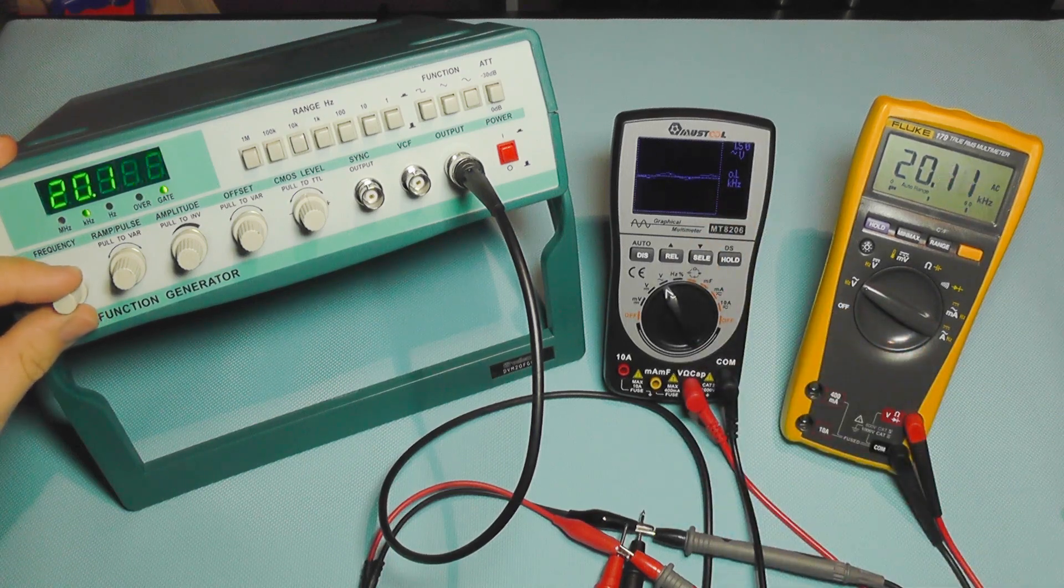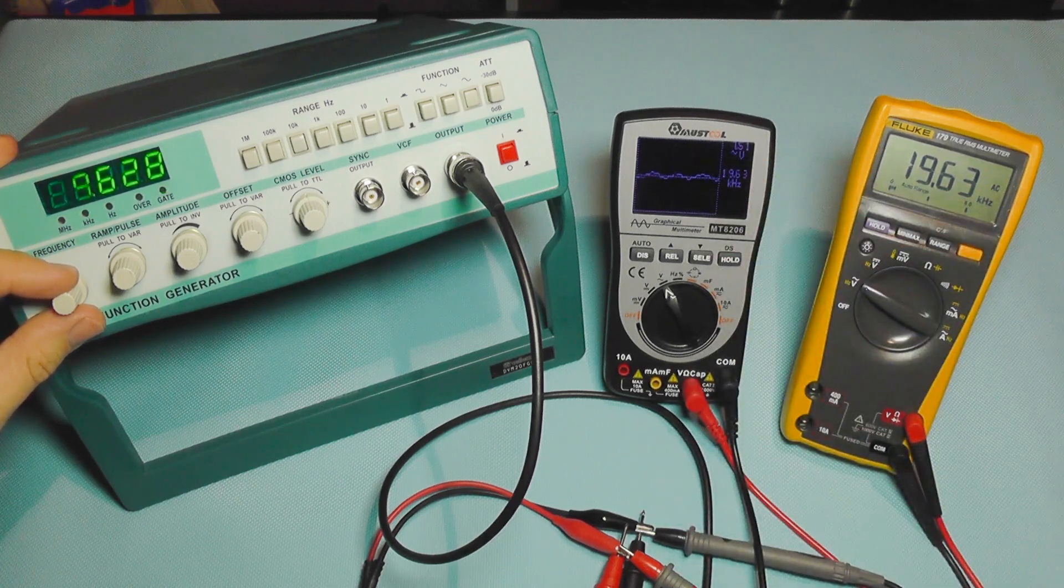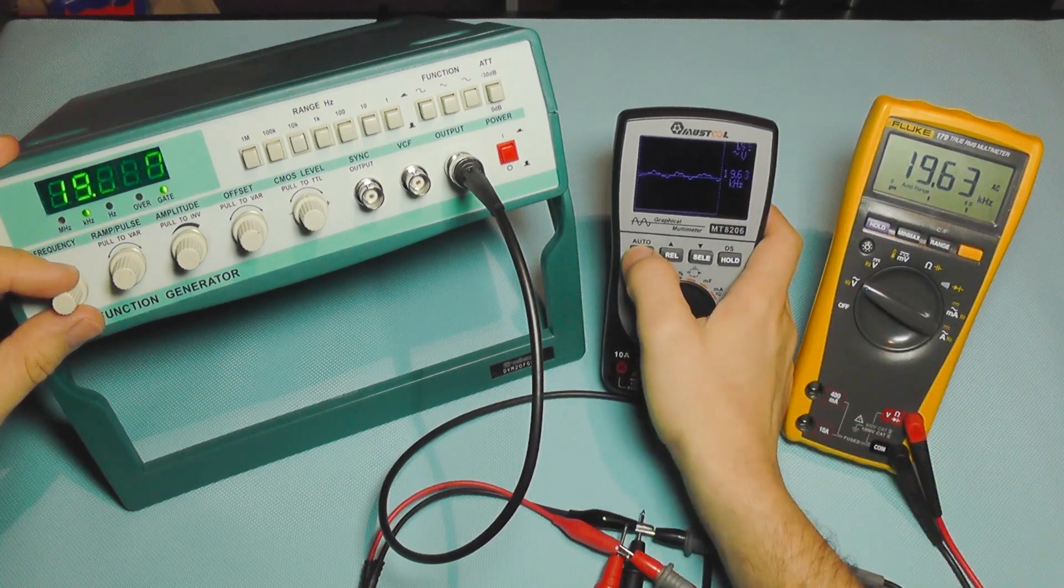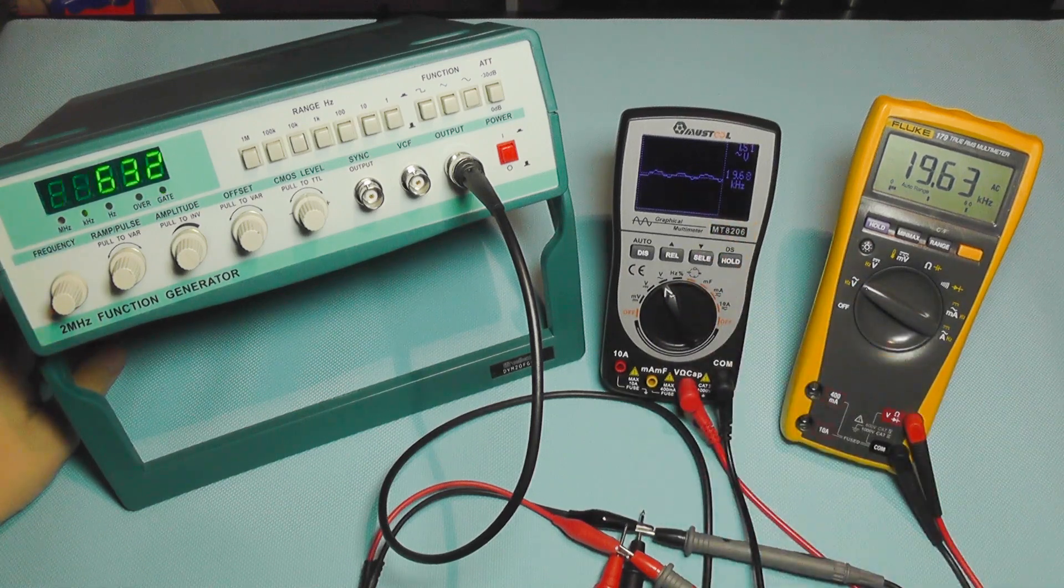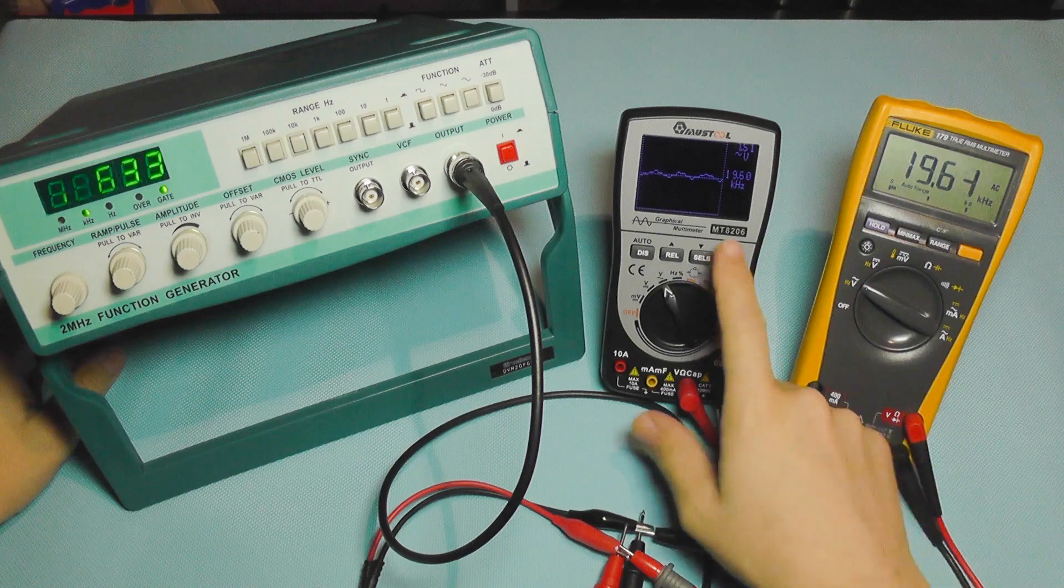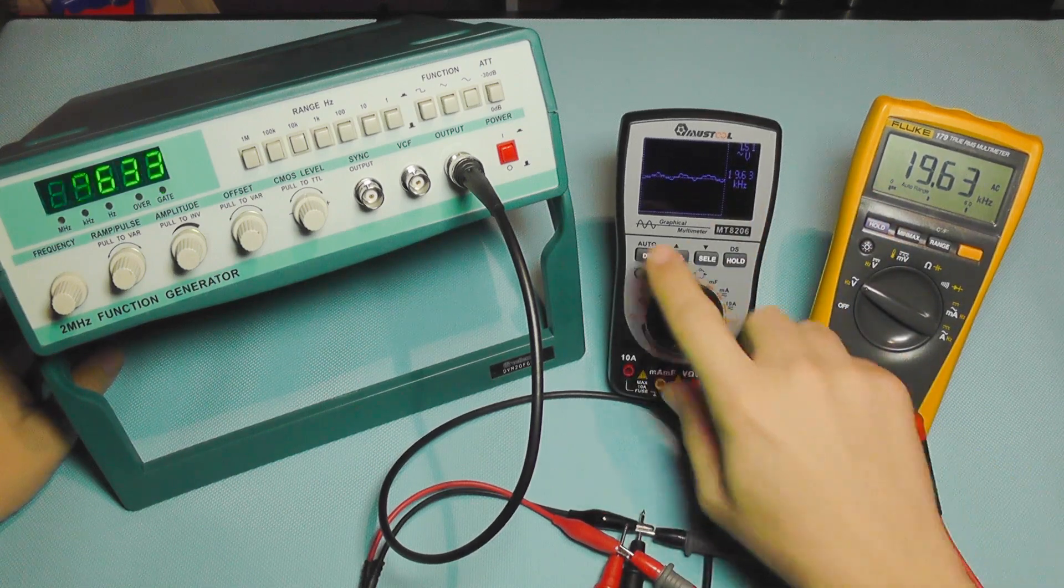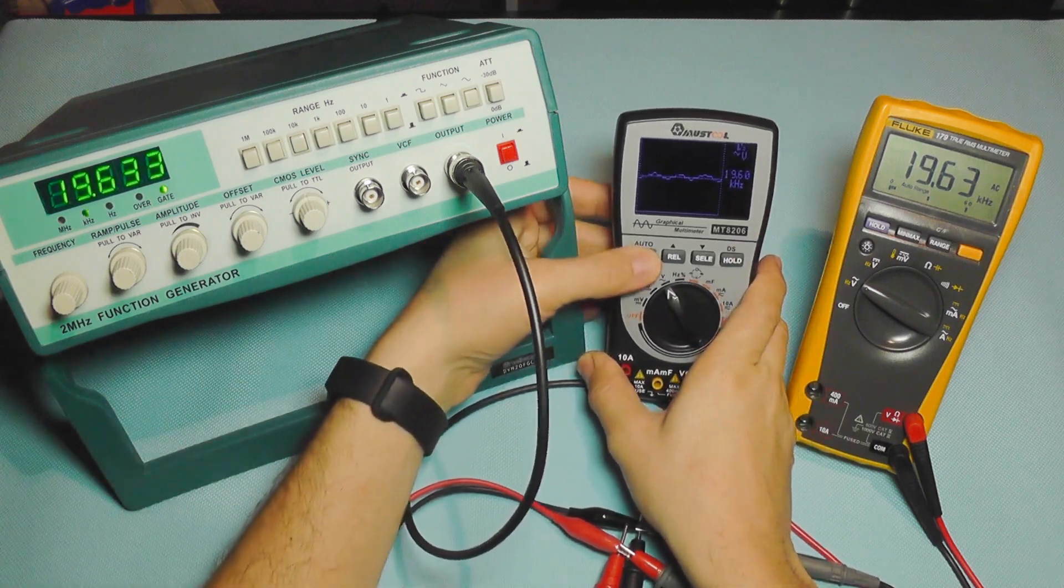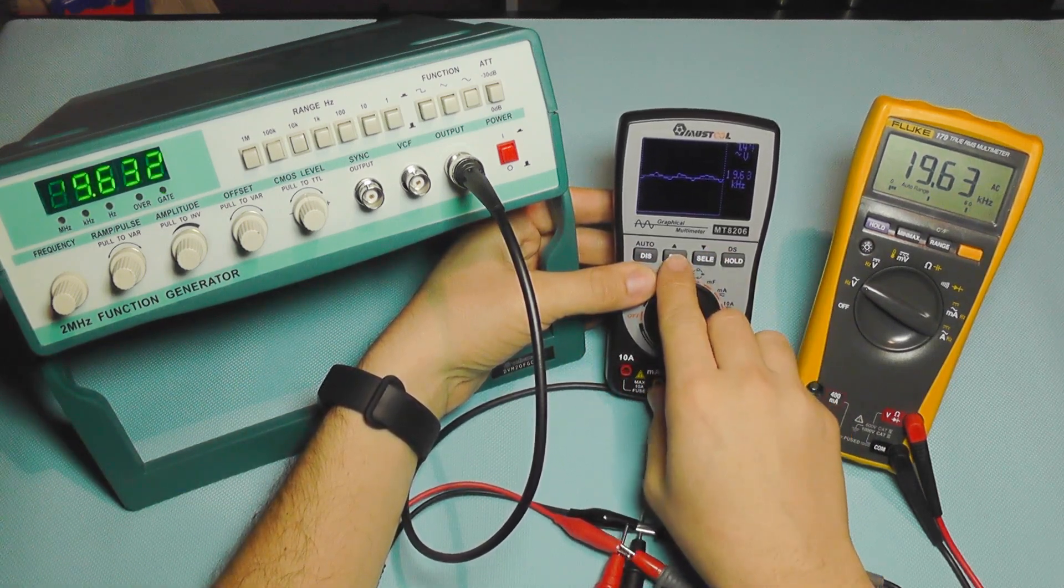I'm going to switch to 10k range and I'm now doing 20 kilohertz. This shows 0.L, so it's not displaying the frequency anymore. If I press the auto range, it still shows some kind of graphic but it's not showing the frequency. I'm going to go under 20 kilohertz and there you go, it has started to work. It's exactly as in the manual. The manual states that it will work until 20 kilohertz, which it actually does.